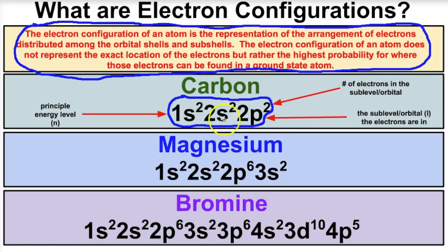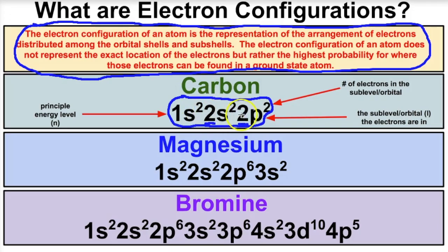We can also look at an electron configuration and determine how many valence electrons the atom has. Going to the outermost energy level — the second energy level — there are two electrons in the s sub-level and two in the p sub-level. Add those together and you get four valence electrons. So from an electron configuration we can extract where electrons are in three-dimensional space and how many valence electrons there are.